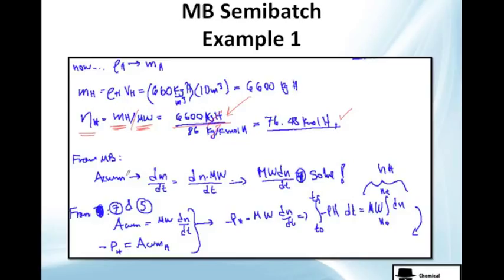Now, from the mass balance there will be an accumulation. Accumulation is always mass over time. As I told you, accumulation is always this delta guy here.